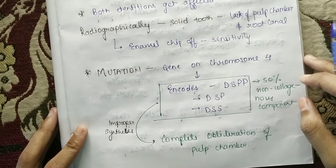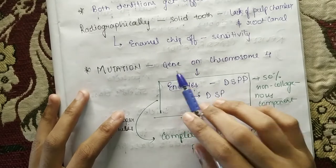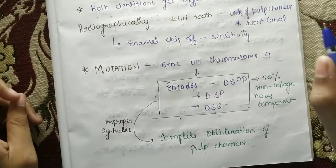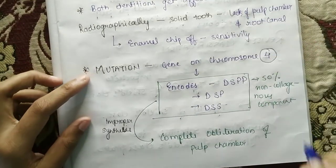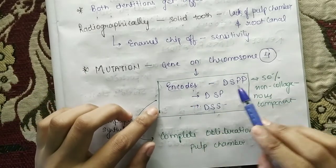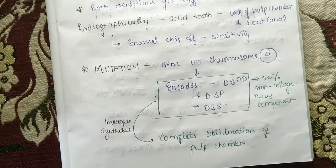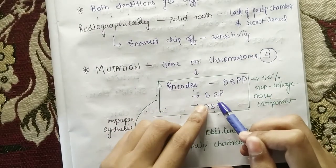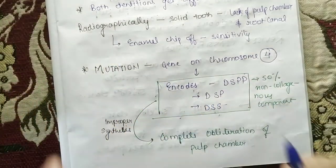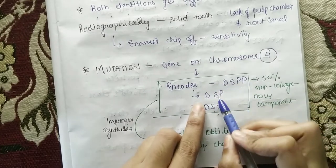Now here there is a mutation. The gene is located on chromosome number 4 — gene on chromosome number 4, yeh yaad rakhna. That gene encodes DSPP — Dentine Sialo-Phosphoprotein. DSPP is considered the major cause for dentinogenesis imperfecta.